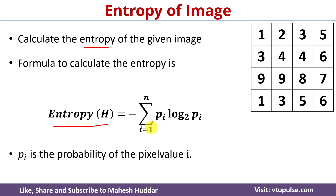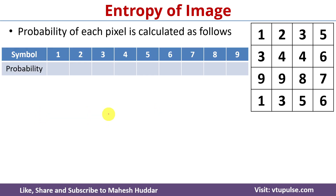Here p(i) means the probability of a pixel value i. For example, what is the probability of pixel value 9, or pixel value 4, and so on. Given this image, first we need to calculate the probability of each pixel value. Once we calculate the probability, we can use the entropy equation. There are totally 9 unique pixel values, that is 1 to 9.